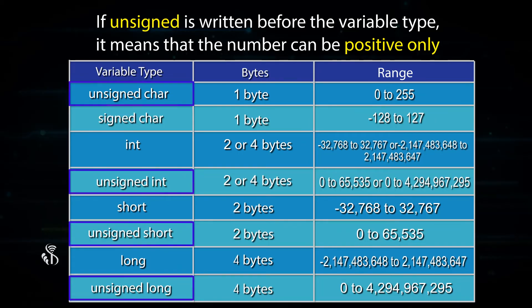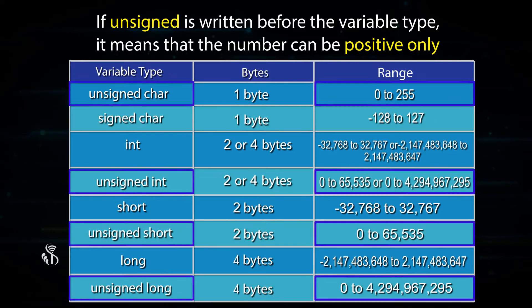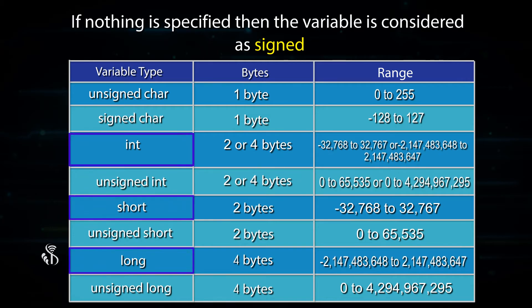If unsigned is written before the variable type, it means that the number can be positive only. If nothing is specified, then the variable is considered as signed.